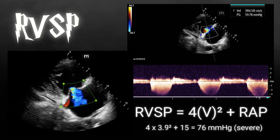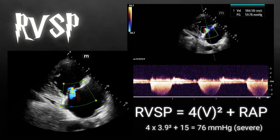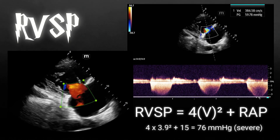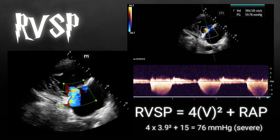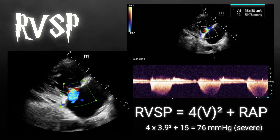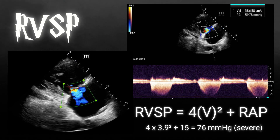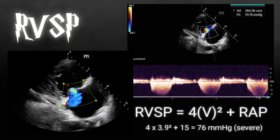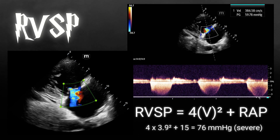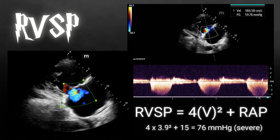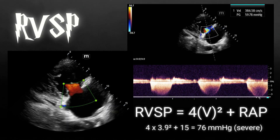We know the patient must have chronic RV dysfunction because the RV cannot acutely generate a pressure over about 60 millimeters of mercury. Being that her RV SP is 76, that means a chronic process is occurring. There could be an acute process on top, but we know that the RV is chronically affected.